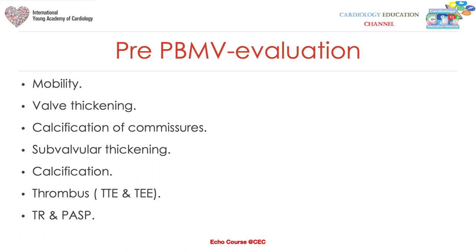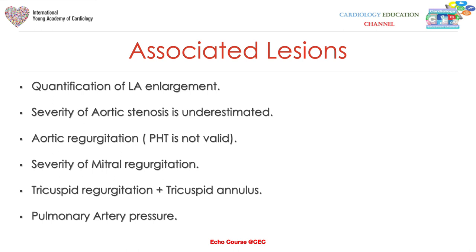Pre-balloon mitral valvuloplasty evaluation includes assessing mobility, valve thickening, commissural calcification, subvalvular thickening, calcification, and the presence of thrombus in the left atrium — assessed by transthoracic echo — and in the left atrial appendage by transesophageal echocardiography. Tricuspid regurgitation and pulmonary artery systolic pressure should also be assessed.